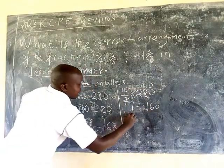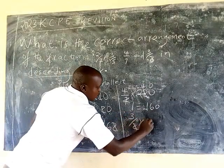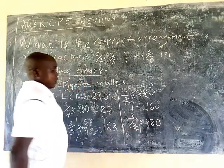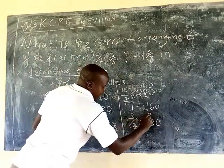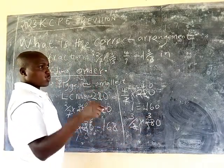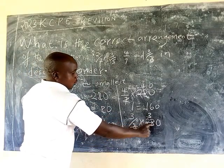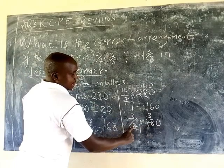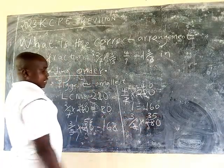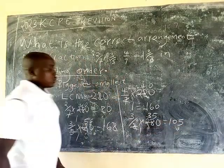And the last one is 3/8 times 280 over the LCM. 280 divided by 8 is 35, times 3 gives 105. So now we compare the numerators: 80, 168, 160, and 105.